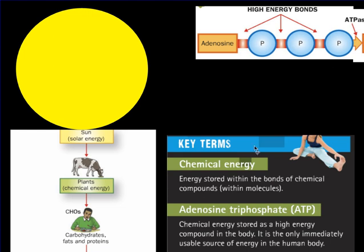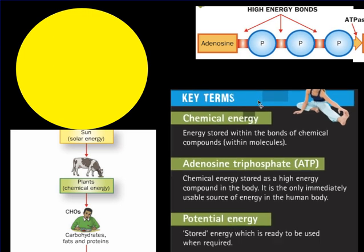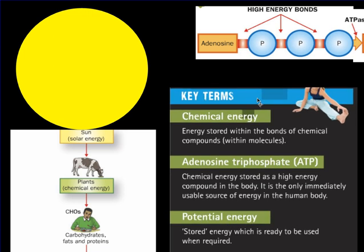The energy stored in ATP we call potential energy—stored energy which is ready to be used when required. From our point of view, this is used when our muscles contract, when we throw a javelin, when we sprint, when we move. It's this potential energy that we're going to tap into within the ATP.